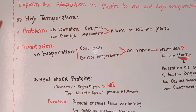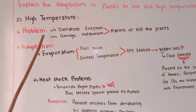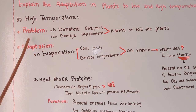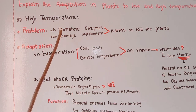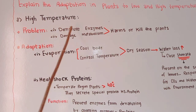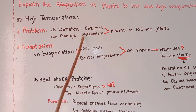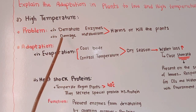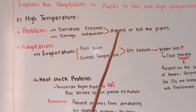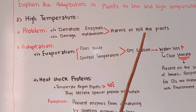We explain the adaptation at high temperature. The problem faced by plants at high temperature is that high temperature can denature their enzymes and damage their metabolism. Denaturing of enzymes and damaging of metabolism ultimately harms or kills the plants.